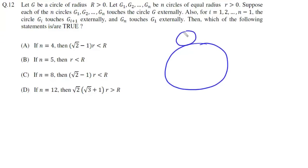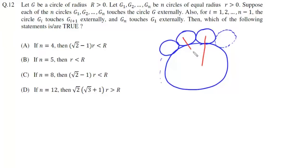So we have this large circle with radius R, and then we have these smaller circles which touch each other, continuing up to g1 and gn. Now if we look at any two adjacent circles, the angle between them will simply be 2π/n. Looking at this triangle, the half angle will simply be π/n.